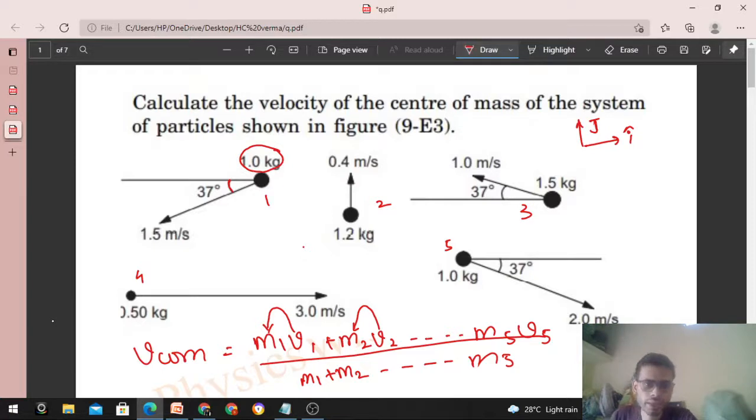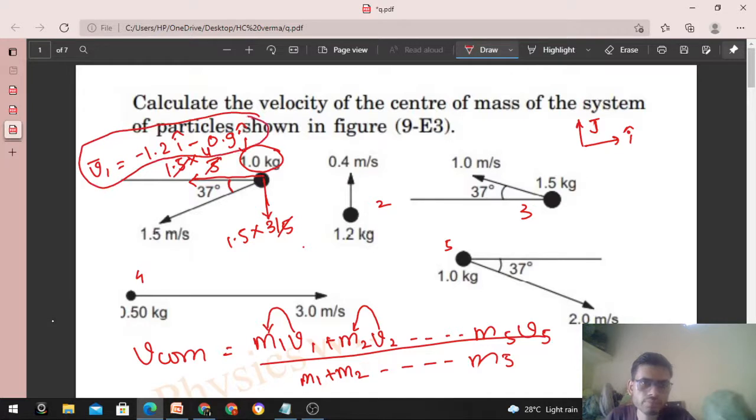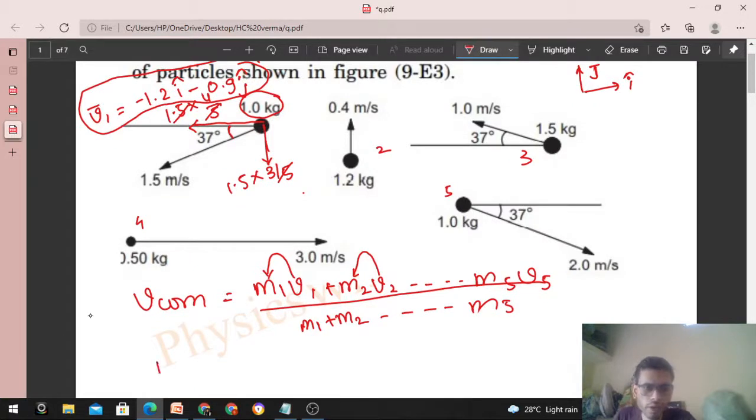So for v1, velocity of the first particle, right, that will be - let's take components. In the x direction, component will be 1.5 cos 37 which is 4 by 5, and downward component will be 1.5 sin 37 which is 3 by 5. So check, this is 0.3 into 4, so 1.2. And it will be minus, minus 1.2 i cap, and downward, so minus j cap. And j cap component will be minus 0.9. So minus 0.9 j cap. So this is your v1. Right? m1 is 1 kg. Let me write it. m1 will be 1 multiplied by minus 1.2 i cap minus 0.9 j cap.